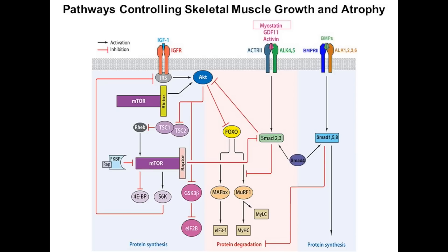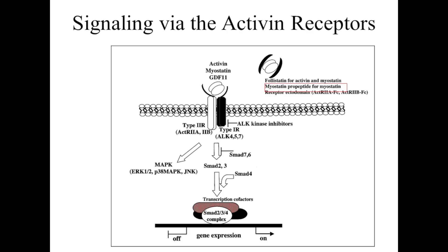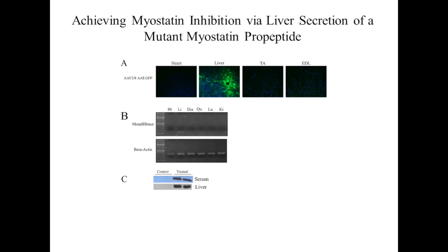There are a number of ways to inhibit myostatin. The approach used in animals is overexpression of the myostatin propeptide — the piece involved in parking the whole myostatin molecule in the matrix surrounding skeletal muscle fibers until it's activated. If you overexpress the propeptide without the signaling end, you compete the full-length myostatin out of the depot, so it's not available in the tissue for signaling. In that sense, you're inhibiting myostatin by out-competing it with the propeptide.